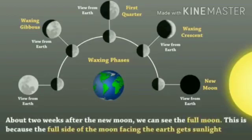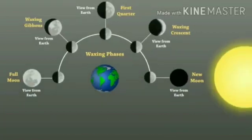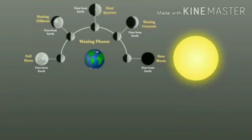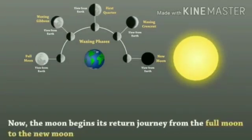About two weeks after the new moon we can see the full moon. This is because the full side of the moon facing the earth is getting sunlight. Now the moon begins its return journey from the full moon back to the new moon.